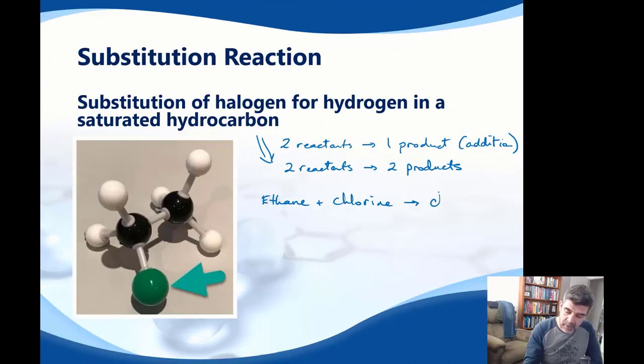The two products are the halogenated alkane and the hydrogen halide. In this case, we would have chloroethane and hydrogen chloride. So let's write that equation down. Our product is going to be chloroethane, but we're also going to have hydrogen chloride, incidentally not hydrochloric acid, as a second product.